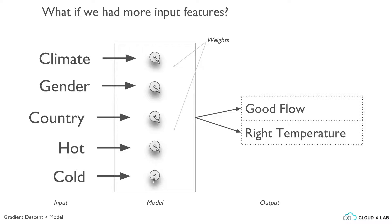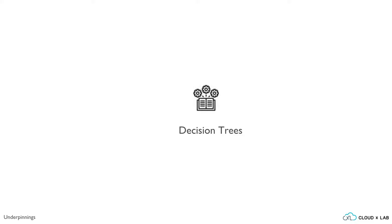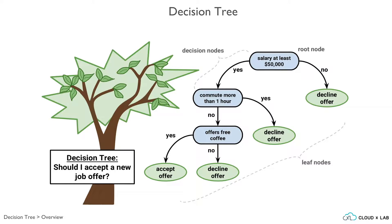Now let's take a look at a different way of solving machine learning problems — it is called decision trees. Even if we are not aware, we make hundreds of decisions based on simple conditional statements in our day-to-day life. Decision trees are just an extension of this way of making decisions. In the example on the screen, the decision tree is for deciding if I should accept a new job offer or not. First, I check if the salary is at least $50,000, then if the commute is more than one hour, and then if it offers free coffee. Based on these three questions, I make a decision on whether to accept or reject the new job.